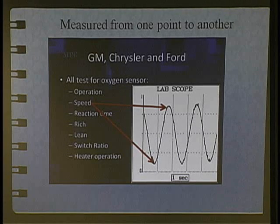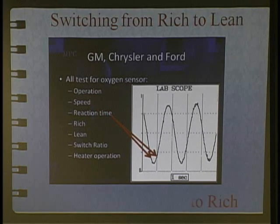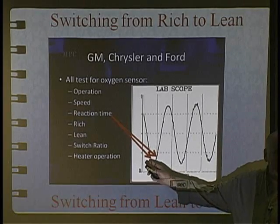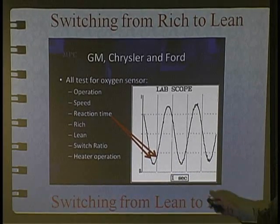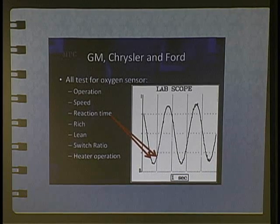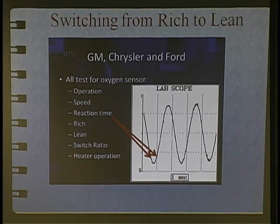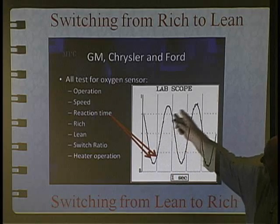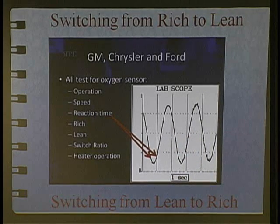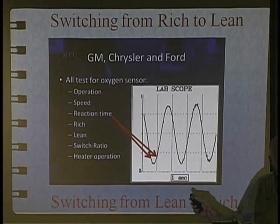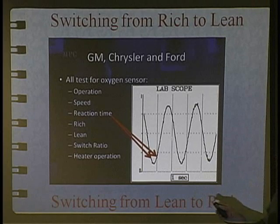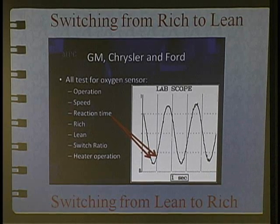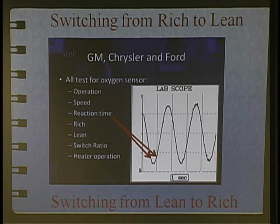The speed of the oxygen sensor is how fast it goes from rich to lean or lean to rich. The reaction time is how fast it goes and turns around and switches. We can look at speed in another way — we'll show you that in a second. Reaction time — does this reaction time look symmetrical? It all looks the same and kind of normal if you're using a digital storage scope with a one-second sweep rate. If you're using a 500-millisecond sweep rate like Delco teaches, it's going to look different. Your switch times are going to look faster.